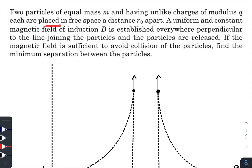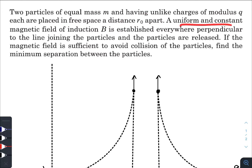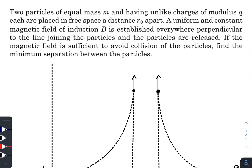Each are placed in free space a distance r-naught apart. A uniform and constant magnetic field of induction B is established everywhere, perpendicular to the line joining the particles, and the particles are released. The magnetic field is sufficient to avoid collision of the particles. Find the minimum separation between the particles.